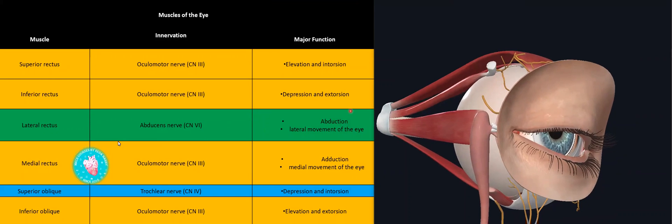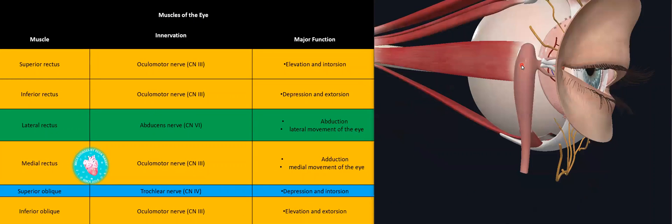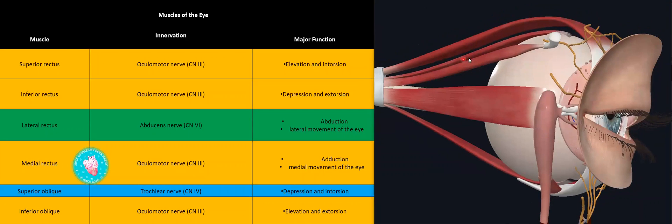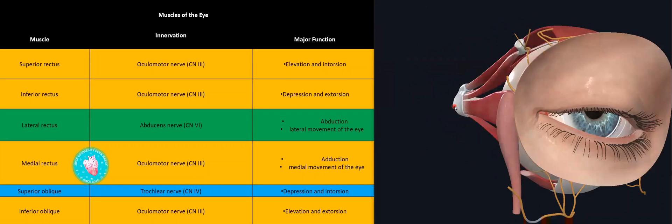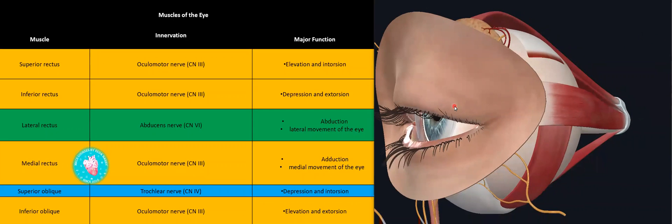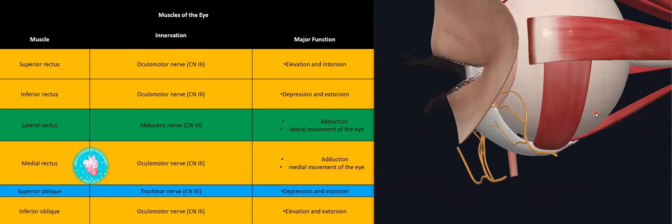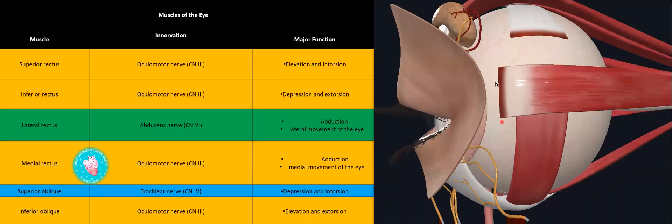There are four recti: superior rectus, inferior rectus, medial rectus, and lateral rectus. The recti function is by name — superior doing elevation of the eyeball, inferior doing depression of the eyeball — and they are attached in front of the middle line of the eye.